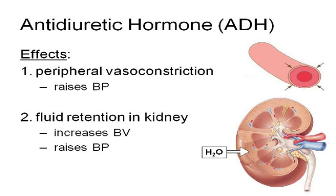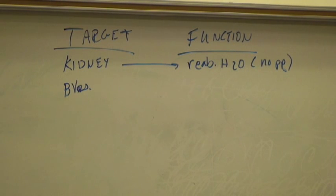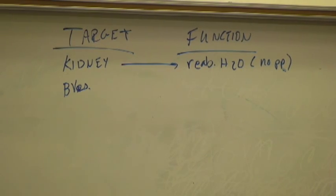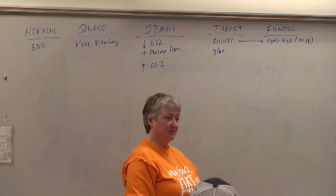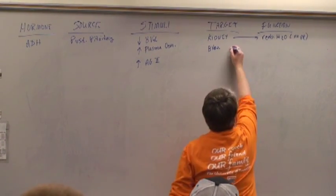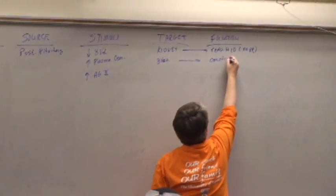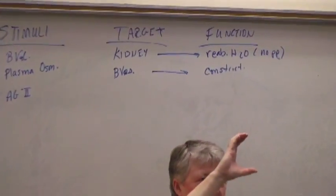Where does ADH go? ADH targets the kidneys and blood vessels. Its job is to tell the kidney to reabsorb water — take some of that water in the urine and put it back into the bloodstream, making a smaller volume of urine that is more concentrated. It also tells blood vessels to constrict, which increases the pressure.